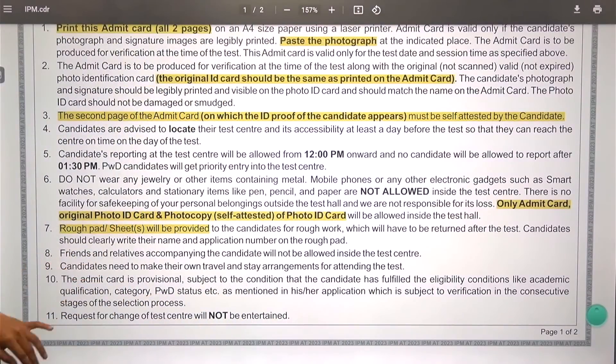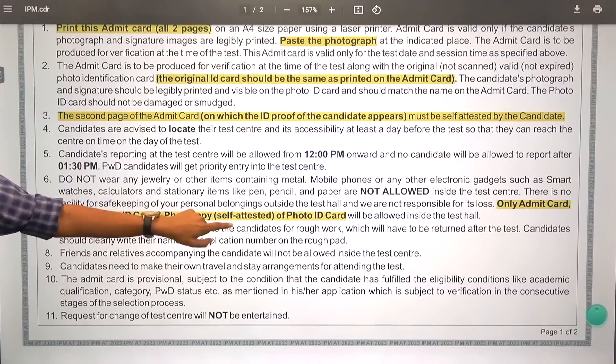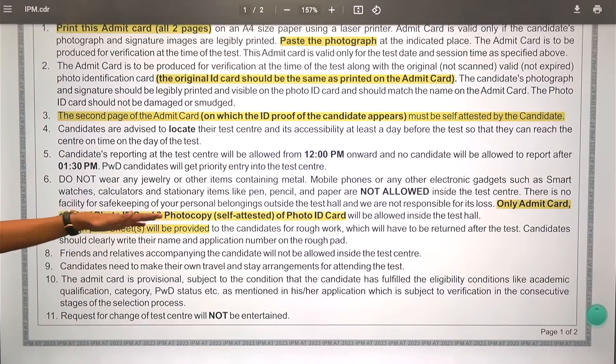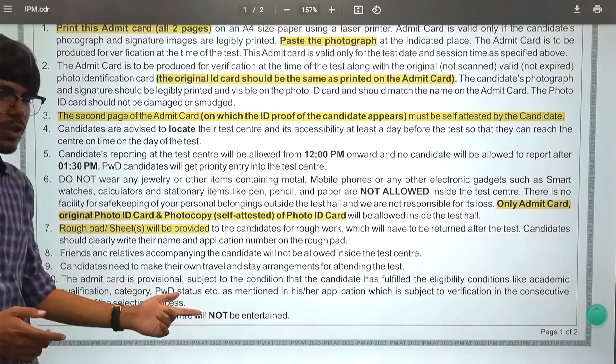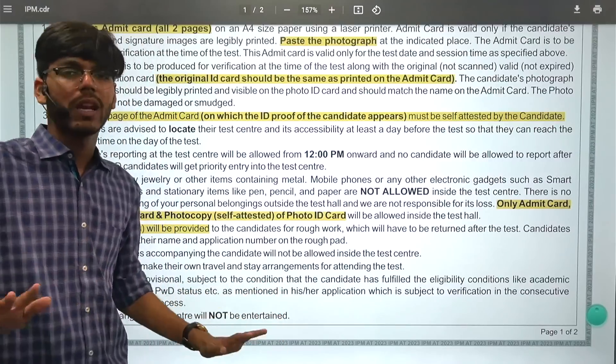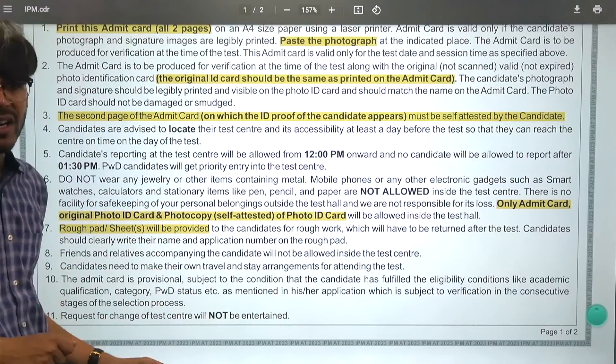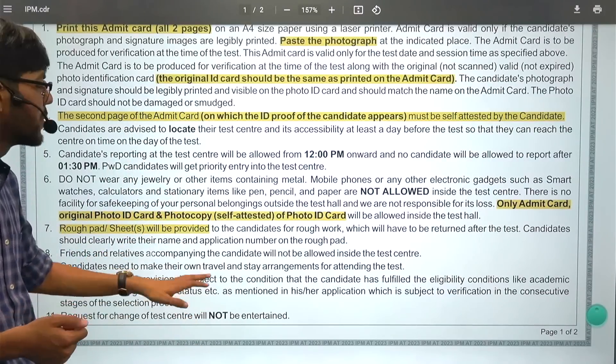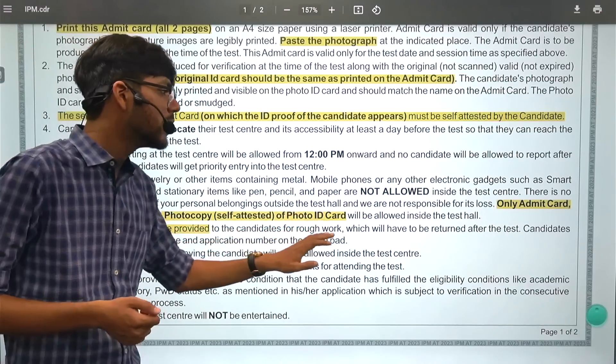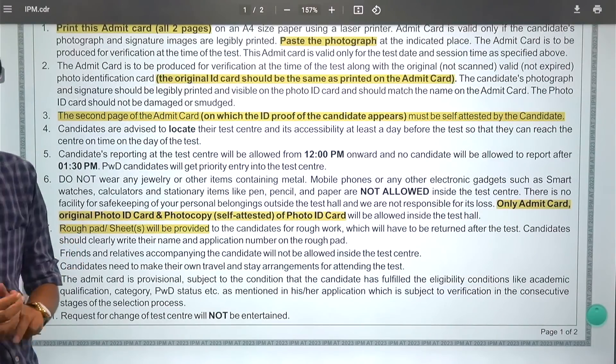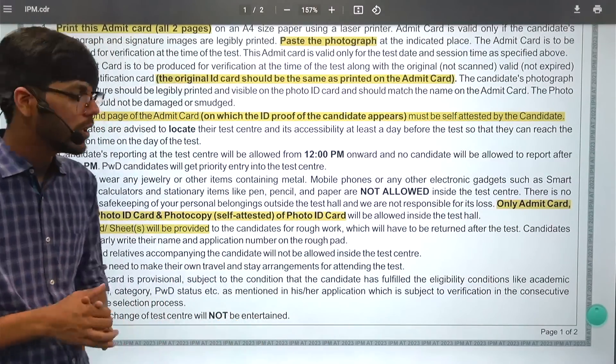All that you need to carry is your original photo ID card, which will remain in your second page. Photocopy self attested, which is the second page. I am pretty much sure, but then, no one will ask to take your ID card to your photocopy. If you have not done any photocopy, relax, don't worry, because I am 100% sure or rather 99% sure that they are talking about the second page only. So that is what you need to carry and Admit card you need to carry. So there are three things: Admit card, original photo ID and also its photocopy. That is all that you need to carry.